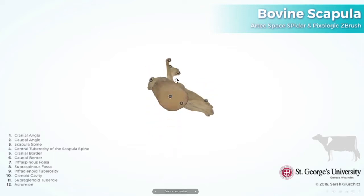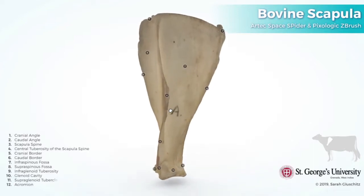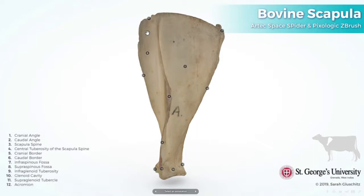Borders: there are three borders in the scapula bone. The dorsal border, which is facing toward the vertebral column; the cranial border, which is facing toward the head; and the caudal border, which is facing toward the tail.